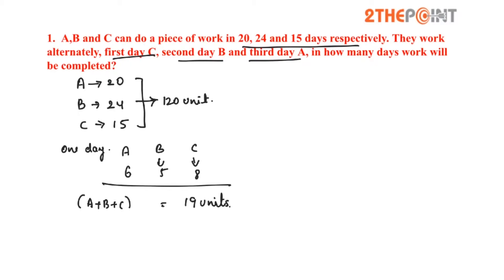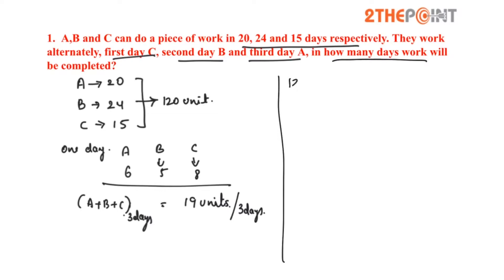In the question it is mentioned that they work alternately, so all three won't work together. The three-day work of A, B and C together is 19 units for 3 days. Now we have to find in how many days the work will be completed. That is total work divided by 19 units for 3 days: 19 into 120, which equals 19×6 or 114.